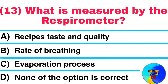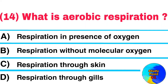Question No. 13. What is measured by the respirometer? Answer: Rate of breathing. Question No. 14. What is aerobic respiration? Answer: Respiration in the presence of oxygen.